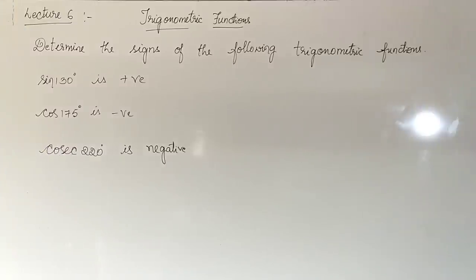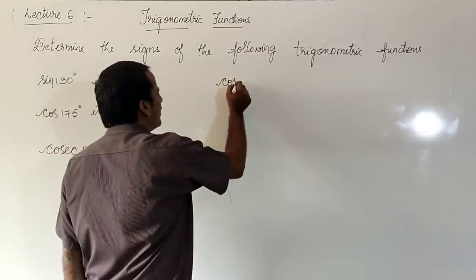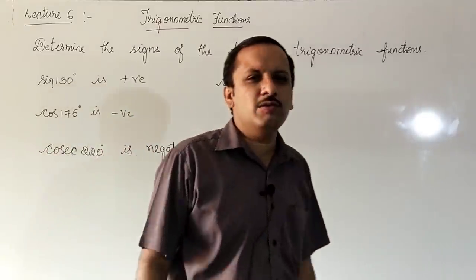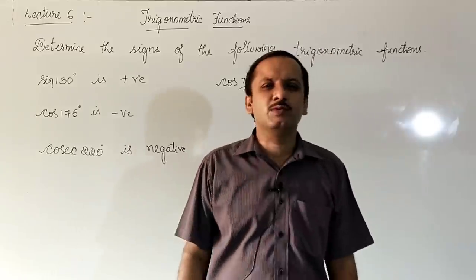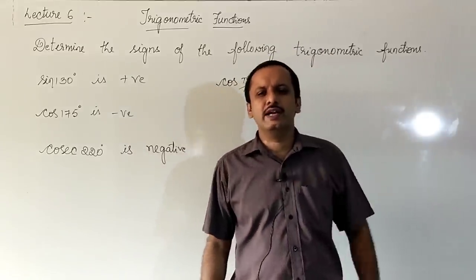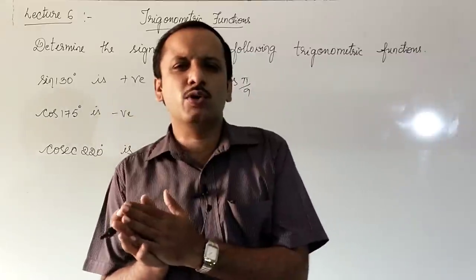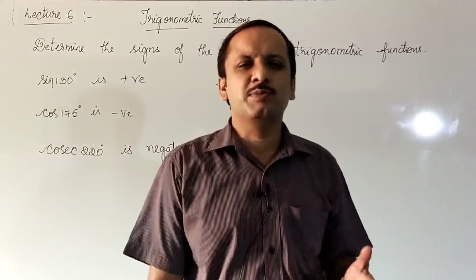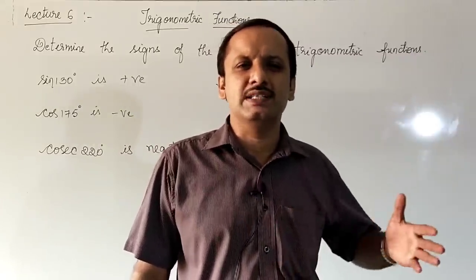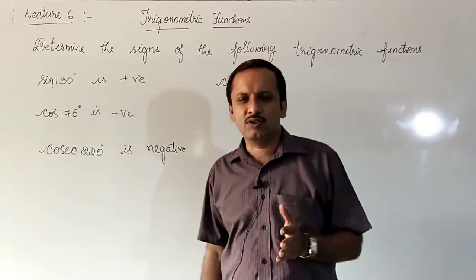Next: cos π/9. They have given the angle in terms of radians. In terms of radians: between 0 and π/2 is the first quadrant, π/2 to π is the second quadrant, π to 3π/2 is the third quadrant, and 3π/2 to 2π is the fourth quadrant.